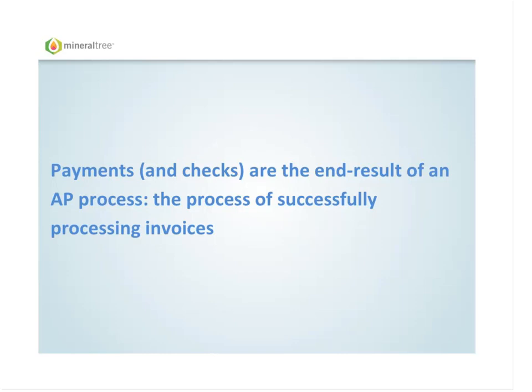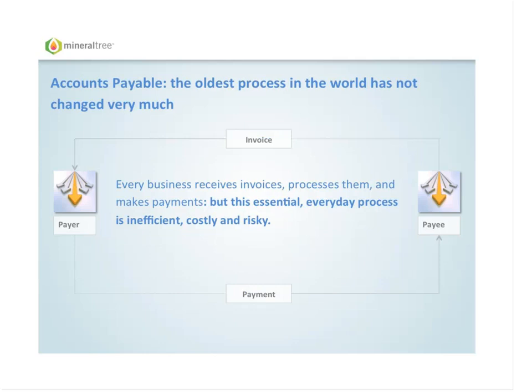Checks are a problem, but I want to make it worse — because what we're talking about is the tail end of a payment process. The issuance of a payment is the end result of an AP process; it starts much further upstream. What we're really dealing with is an accounts payable process — in some ways, the oldest process in the world, and it hasn't changed very much. A vendor sends you an invoice for services delivered, and the payer has to process that invoice and make a payment.